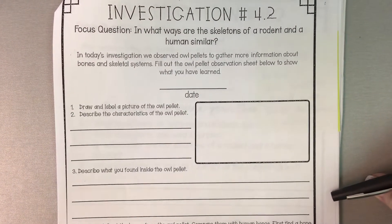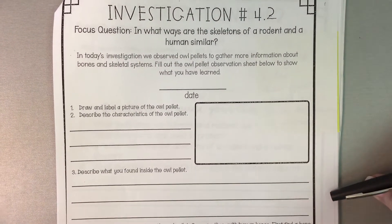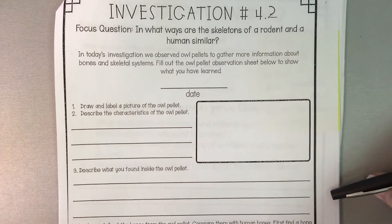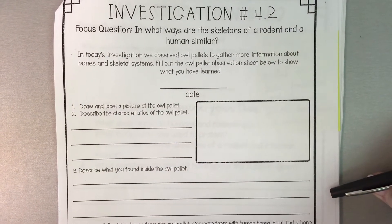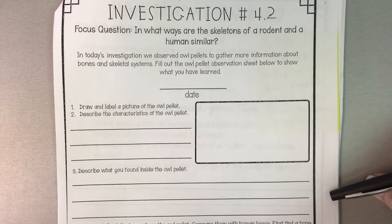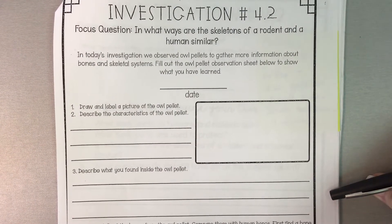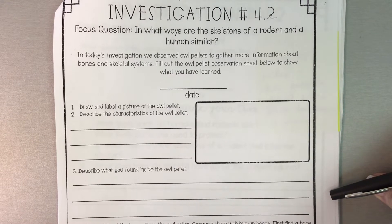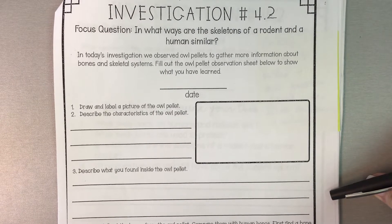All right, if you said the owl pellet was round, black and brown, and that it was furry and bumpy, you are correct.